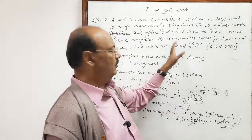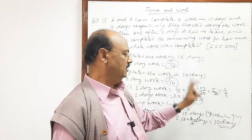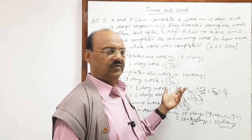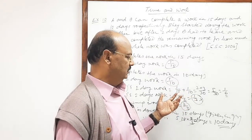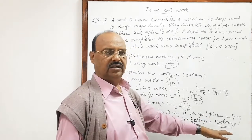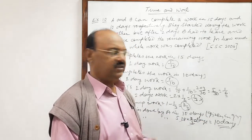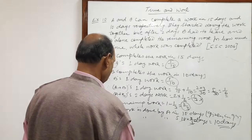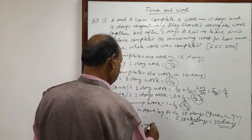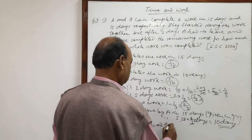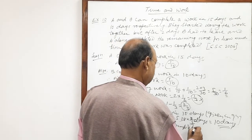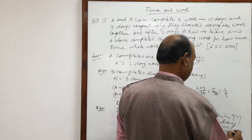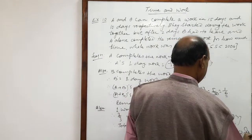A and B together had already worked for 2 days, so the answer will be 10 plus 2. They completed 2 days together, then B left the job, and after B left, A takes 10 more days. So the total number of days required in completing the job is 10 plus 2 equals 12 days. Therefore, the total time required for completing the work is 12 days.